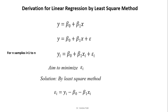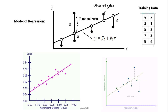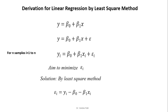This completes the theory of linear regression. Now, derivation for linear regression by the least square method. We start from scratch. Our equation is y equal to beta0 plus beta1 times x. For every sample, an error is associated, represented by epsilon. With n number of samples, the equation becomes: yi equal to beta0 plus beta1 times xi plus epsilon_i. Our aim is to minimize epsilon_i. Rearranging, epsilon_i equal to yi minus beta0 minus beta1 times xi.